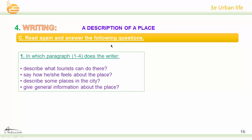Read again and answer: In which paragraph from 1 to 4 does the writer describe what tourists can do there, say how he or she feels about the place, describe some places in the city, and give general information about the place? The answers: what tourists can do — paragraph 3; how the writer feels — paragraph 4; describe places in the city — paragraph 2; general information — paragraph 1.